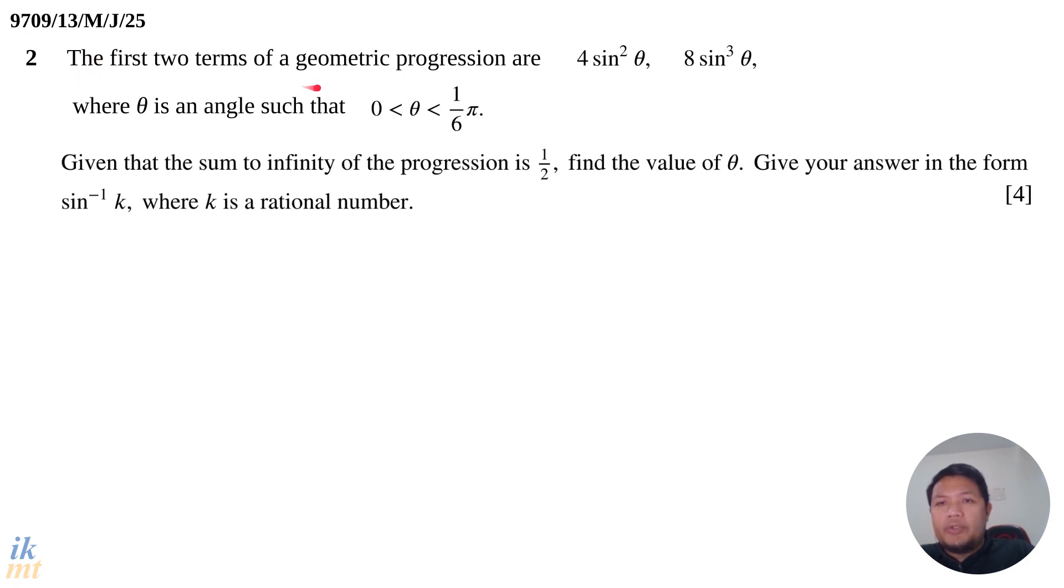The first two terms of a geometric progression are 4 sin²θ and 8 sin³θ, where θ is an angle such that 0 < θ < π/6. This is in radians. Given that the sum to infinity of the progression is 1/2, find the value of θ. Give your answer in the form sin⁻¹k, where k is a rational number.